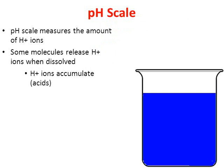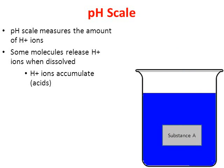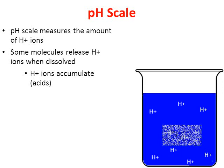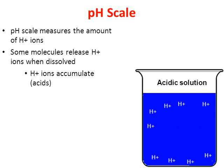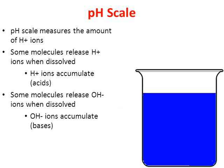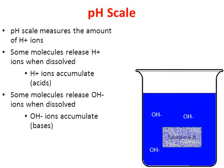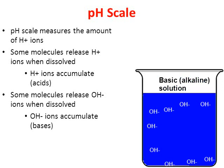Moving on with the pH scale: when substances are dissolved, they will often release hydrogen ions. Watch in this animation — we put substance A into a container of water, and over time substance A dissolves and releases hydrogen ions. This solution is now acidic. Acids have a higher concentration of hydrogen ions. The opposite is true with bases: substance B dissolves and releases hydroxide ions — those OHs — and this forms an alkaline or basic solution.